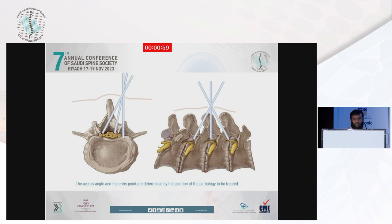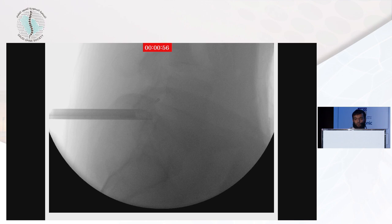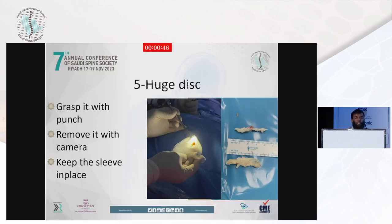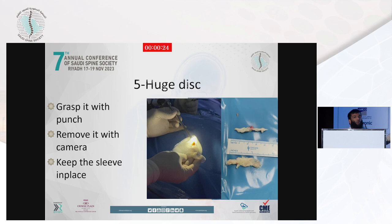In biportal technique, they can do it at multi-levels on the same insertion. And this is biportal — we can see it reaches far upward. For huge disc: a lot of colleagues ask me, if the working sleeve is seven millimeters, how do you extract a huge disc? It is simple — you reach the disc, grasp it, and remove it with the camera while keeping the sleeve in place. Here is the only time I need the assistant. My assistant removes the camera with the disc and the punch all together, but keeps the sleeve inside. So we can extract even a large disc — four or five centimeters — and this huge.